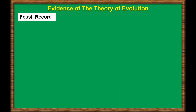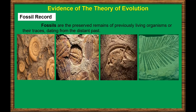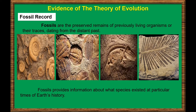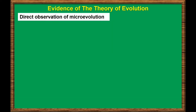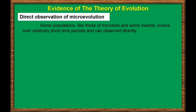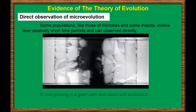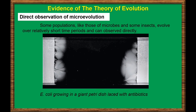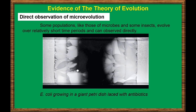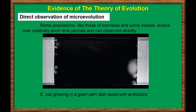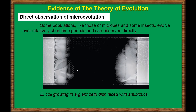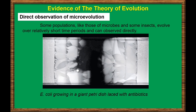Perhaps the most common evidence of evolution is the fossil record. Fossils are the preserved remains of previously living organisms or their traces dating from the distant past. Fossils provide information about what species existed at particular times of Earth's history. Another strong evidence of evolution is direct observation of microevolution. Some populations, like those of microbes and some insects, evolve over relatively short time periods and can be observed directly. Important modern-day examples include the emergence of drug-resistant bacteria and pesticide-resistant insects — for example, E. coli evolving in a giant petri dish laced with antibiotics, showing just how easy it is for bacteria to become antibiotic-resistant.